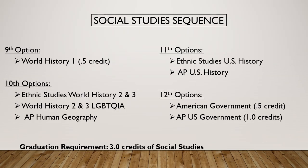For social studies, you get a few more options. Everyone starts in 9th grade with one semester of World History. Once you get to 10th grade, AP Human Geography is often the first AP course people take in high school — but if you don't want that, World History 2 and 3, or the World History 2 plus LGBTQIA World History 3, are all options. You can mix and match the World History 2s and 3s, but you can't do a semester of AP Human Geo and then the LGBTQIA World History 3 — if you want the AP course, you're locked in for the year.